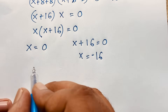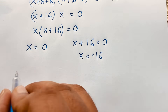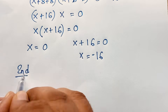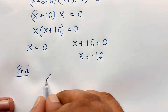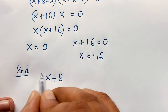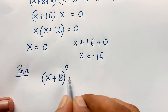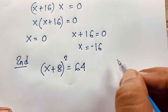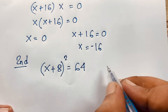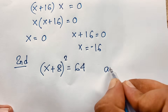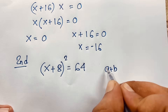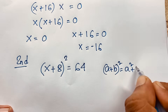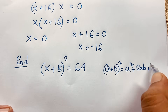Now this algebra problem — I will solve this question using a second method. Our question: (x + 8)² = 64. We know the identity: (a + b)² = a² + 2ab + b².